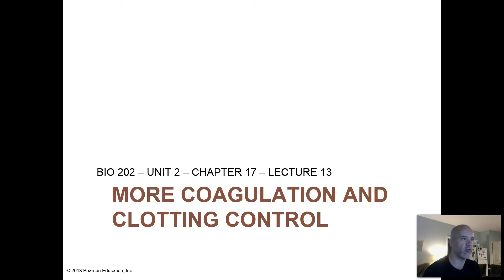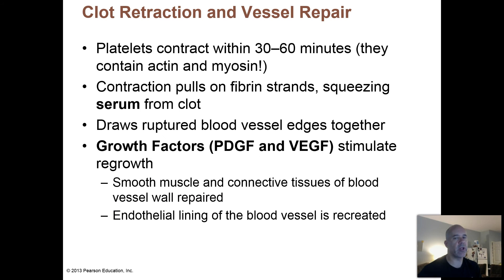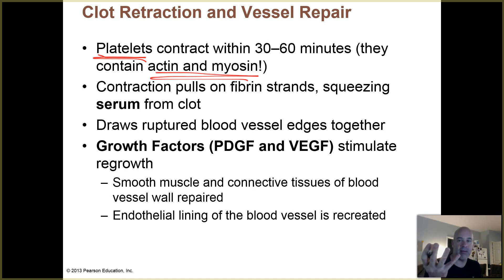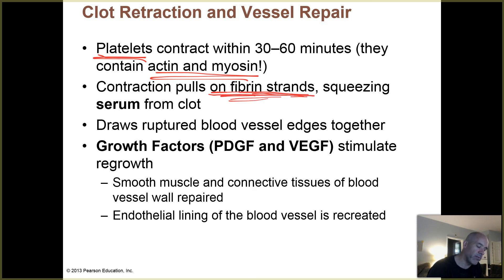Let's talk about how we control coagulation. Once a clot forms, you've got that fibrin meshwork that has trapped platelets and red blood cells. Platelets, interestingly, have actin and myosin in them, just like skeletal muscle fibers, so they can actually contract. They do that within about 30 to 60 minutes after coagulation. That actually pulls on the fibrin proteins, that fibrin meshwork, and squeezes the clot, making it contract and squeeze out the fluid, which is now called serum.